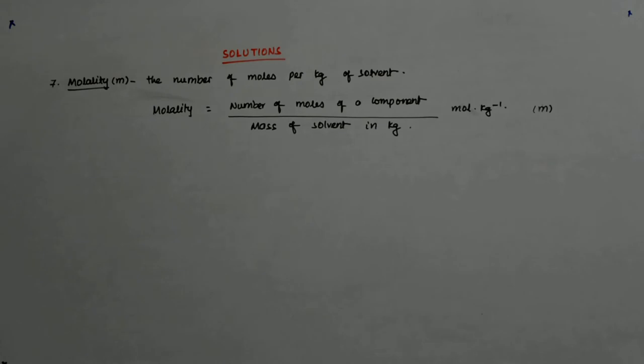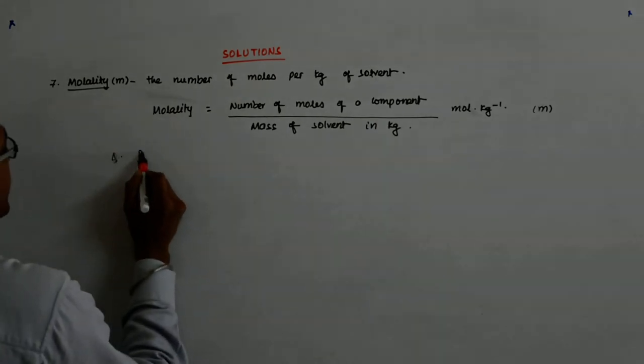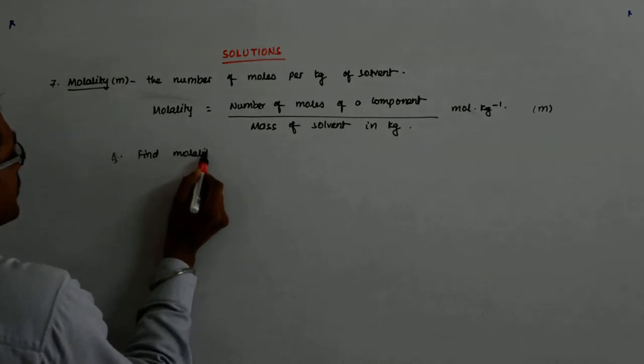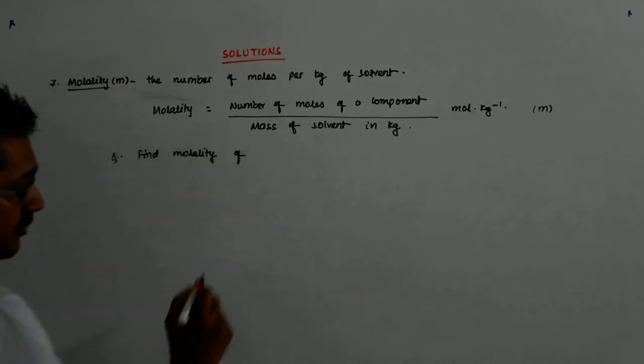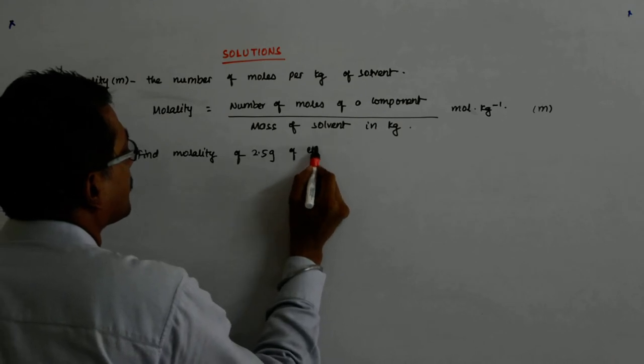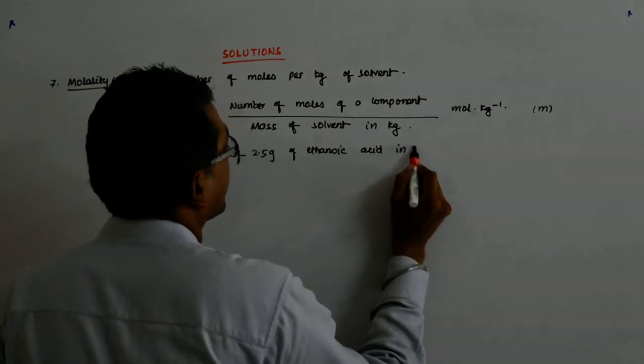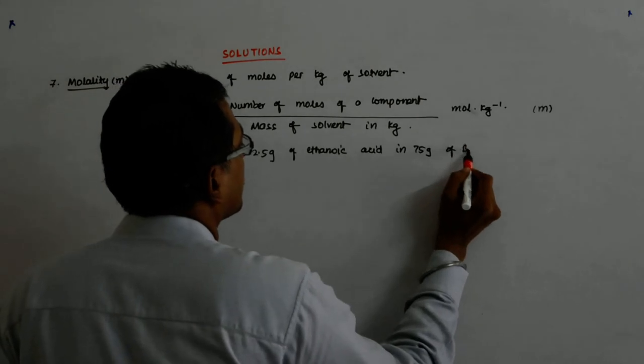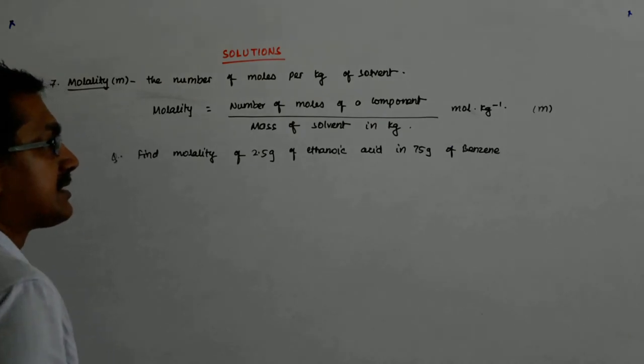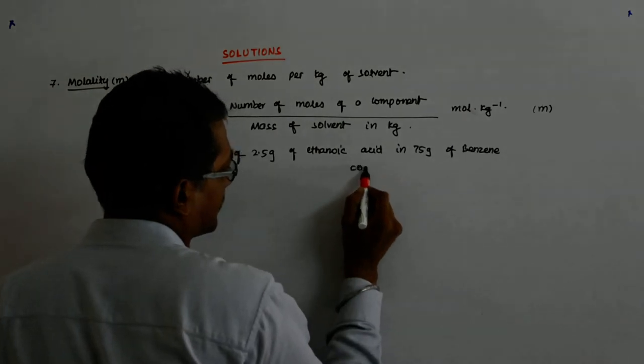If someone asks us to find out the molality of 2.5 grams of ethanoic acid in 75 grams of benzene. Find molality of 2.5 gram of ethanoic acid in 75 grams of benzene. Now, what is ethanoic acid? The ethanoic acid is carboxylic acid.